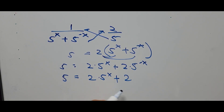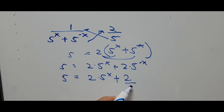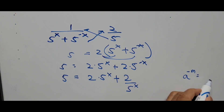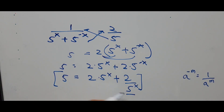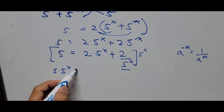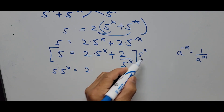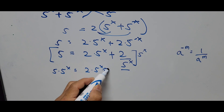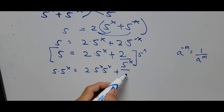We move the negative exponent term to the denominator using the exponent rule: a to the negative m equals 1 over a to the positive m. Next, we multiply the whole equation by 5 to the power x to get rid of the denominator. So 5 times 5 to the power x equals 2 times 5 to the power x times 5 to the power x, plus 2 — that cancels down to just 2.